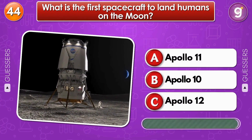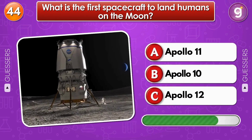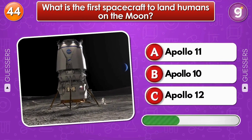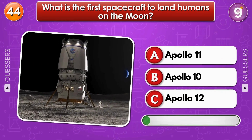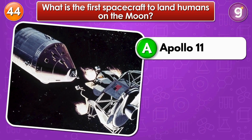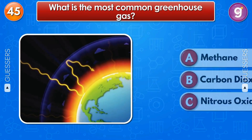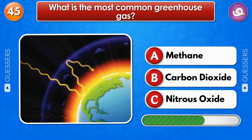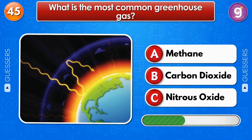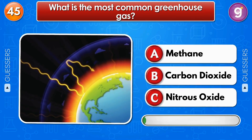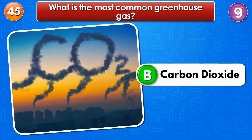What is the first spacecraft to land humans on the moon? Apollo 11. What is the most common greenhouse gas? Carbon dioxide.